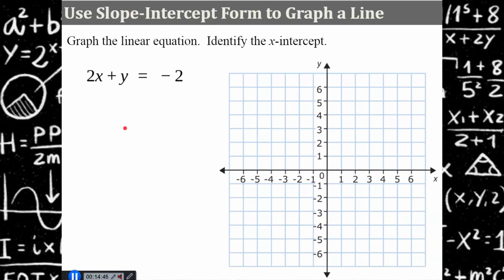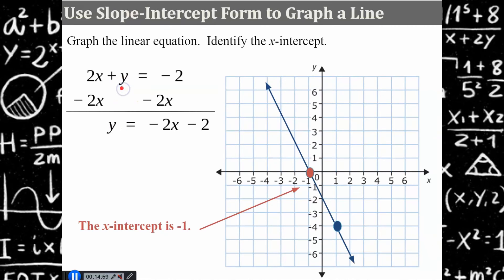Here's another one. Graph and identify the x-intercept. Pause, then return and hit play. Welcome back. First, solve this equation for y by subtracting 2x from both sides: y equals negative 2x subtract 2. The y-intercept is negative 2. Rise 2, run negative 1; rise negative 2, run 1, and you have your line. The x-intercept is negative 1, the point where the line crosses the x-axis.